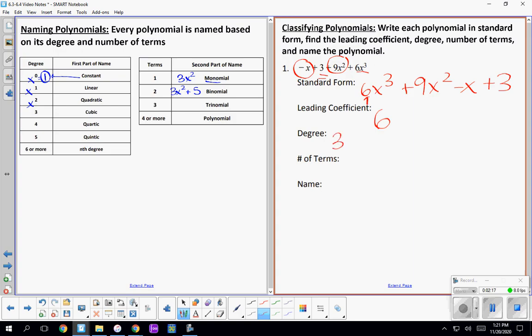It's degree 3. So if we classify it by number of terms, we can look on this side and see that we call this a trinomial. And so its name here is going to be a cubic trinomial because this third power here means cubic. So if we wrote the whole name, we would call this a cubic trinomial.